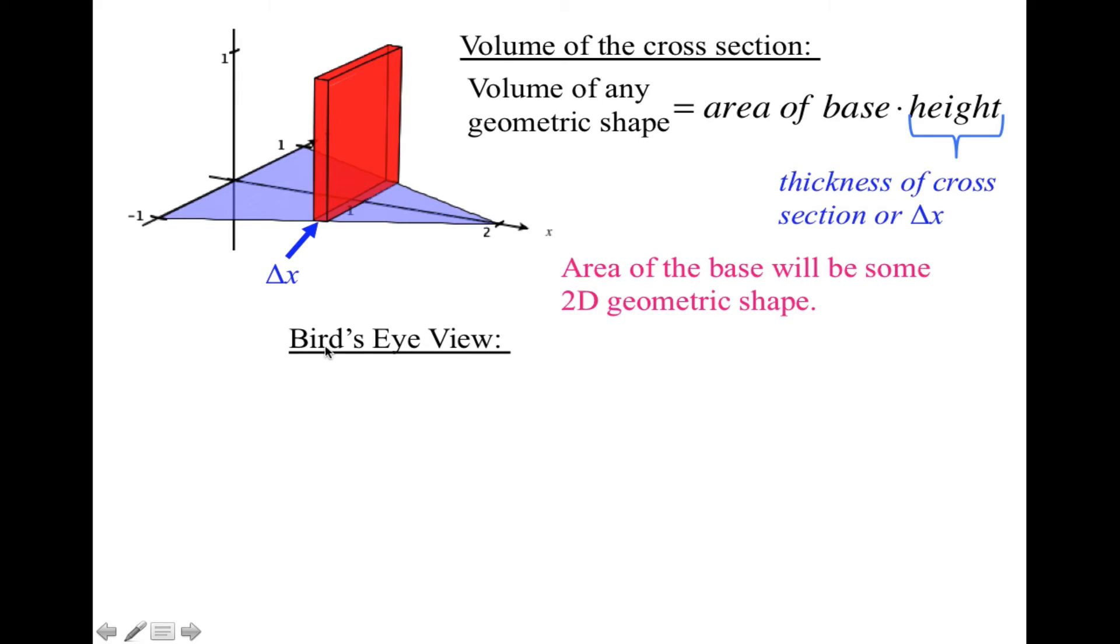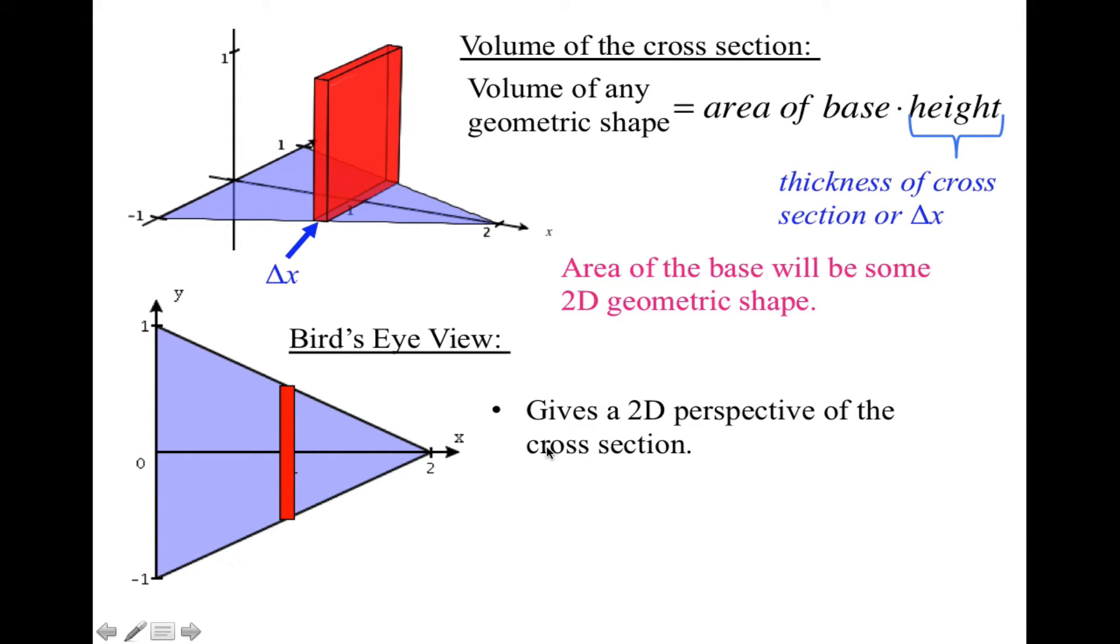We need the area of the base, which will be some 2D geometric shape. What will help you do that is the bird's-eye view. If I was to look at this figure from the top down, I would be seeing something that looks like this. There's the base of my pyramid, and here is the bottom of the square. This part right here is this piece on my 3D model. This gives a 2D perspective of the cross-section. This resembles finding the area between two curves. It appears that you have a rectangle between two curves.